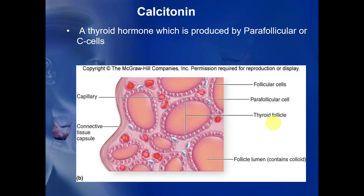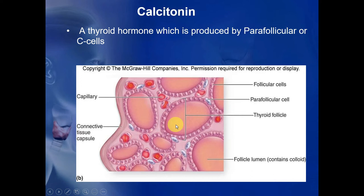Calcitonin is a hormone produced by the parafollicular cells of the thyroid gland, also known as C cells. A useful mnemonic: calcitonin and C cells—C is common in both. The follicular cells are responsible for releasing thyroid hormones T3 and T4, while the parafollicular cells outside the follicle release calcitonin, which participates in calcium regulation.